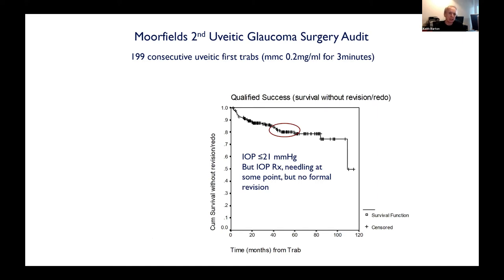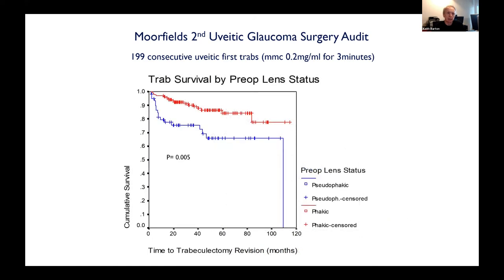We also do a lot of tubes. In selected cases we were getting approximately 80% success rate at four years — the median follow-up in this group. The only thing that really seemed to prejudice the outcome was cataract surgery or lens status. Patients who were pseudophakic to start with did worse than those who were phakic. In fact, the ones who had cataract surgery taken out later actually did better than those who had the trab done after cataract surgery.